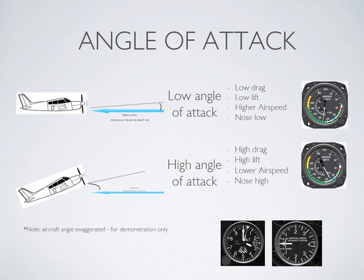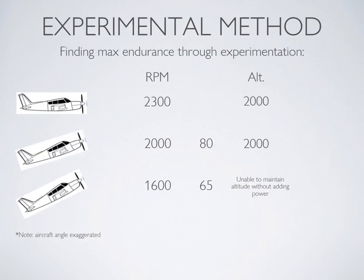We'll keep doing this until the drag produced by the wing starts to overcome the additional lift. It's going to look like this: start at 2,300 RPM, maintain altitude — say 2,000 feet — and record your airspeed. Then reduce to 2,200 RPM, 2,100 RPM, 2,000 RPM, each time maintaining altitude and recording airspeed. We'll find there's a certain power level where if we try to reduce further, we'll no longer be able to maintain altitude.